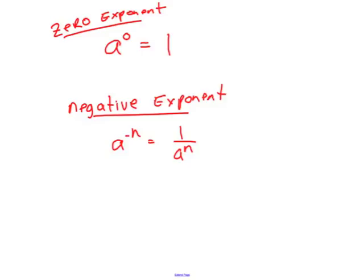In this lesson we've worked with zero exponents — a to the zero power equals 1, meaning any non-zero number raised to the zero power is 1 — and the negative exponent property: a to the negative n equals 1 over a to the n. These are two important properties when working with exponents. This has been Mr. Polarski. Thanks for watching.